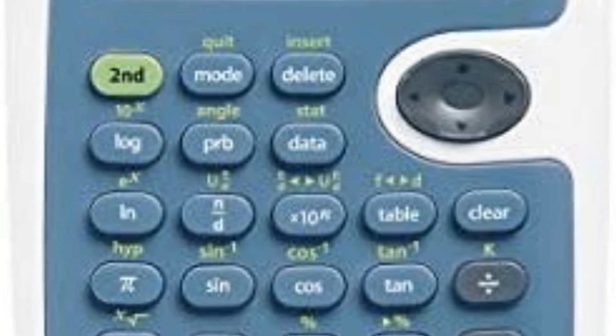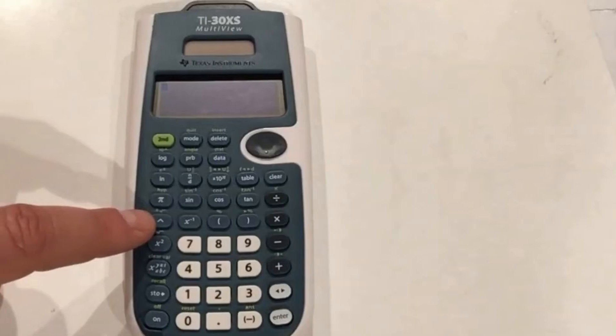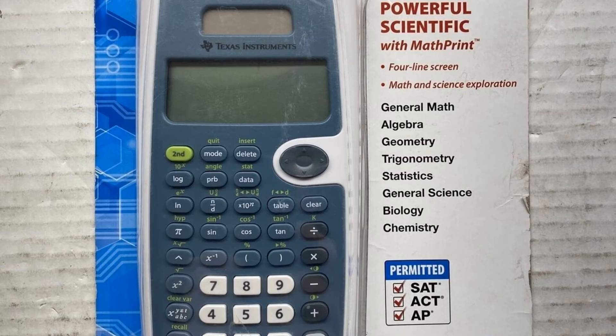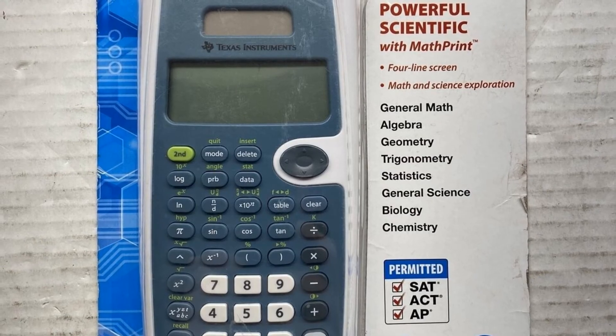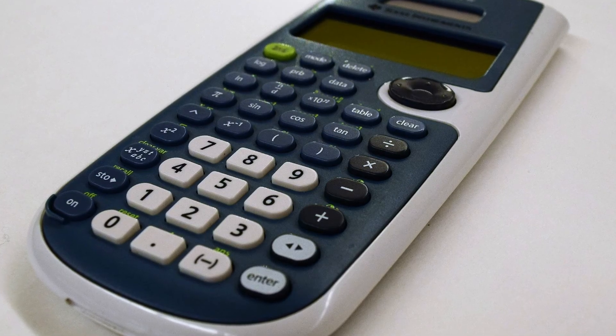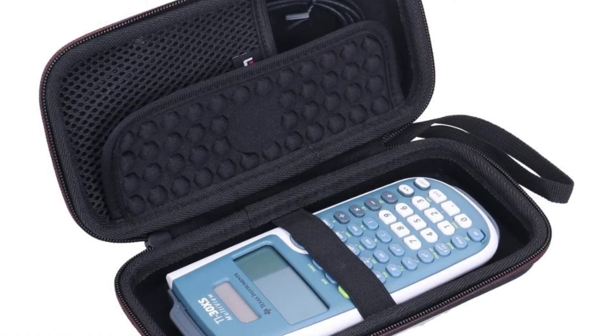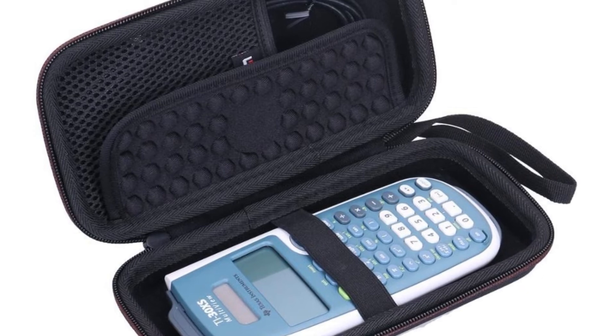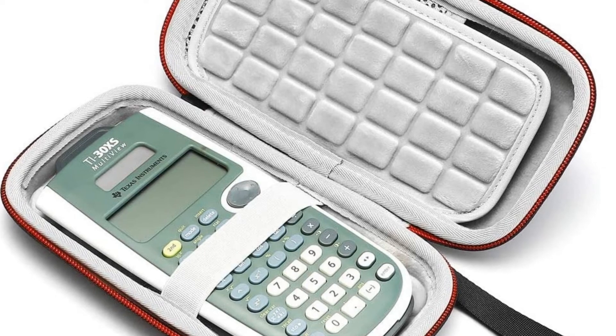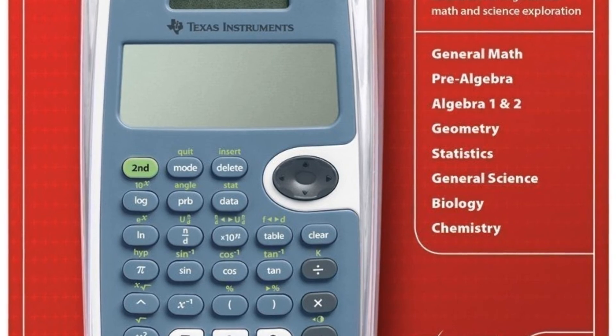Key features: four-line display, one and two variable statistics, MathPrint trademark feature, fraction/decimal conversion, step-by-step fraction simplification. Edit, cut, and paste entries. Solar and battery powered. Ideal for general math, pre-algebra, algebra 1 and 2, geometry, statistics, general science, biology, and chemistry.